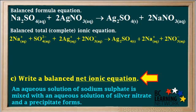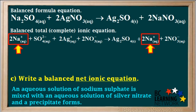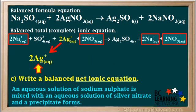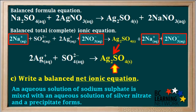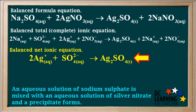Part C asks us to write a balanced net ionic equation. To write a net ionic equation, we discard all the spectator ions in the total ionic equation. Notice that the two Na+ AQ ions on both sides are identical — Na+ is a spectator ion. Also, the two nitrate ions are identical on both sides, so the nitrate ion is also a spectator ion. The ions that remain on the left side are 2 Ag+ AQ (written first because they are positive) and SO4 2- AQ. The only thing left on the product side is the solid Ag2SO4, written exactly the same as in the total ionic and formula equations. So this is the finished net ionic equation.